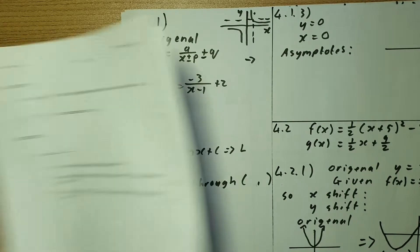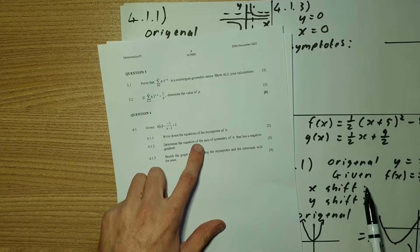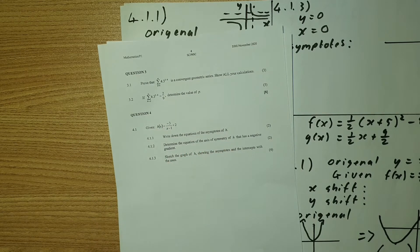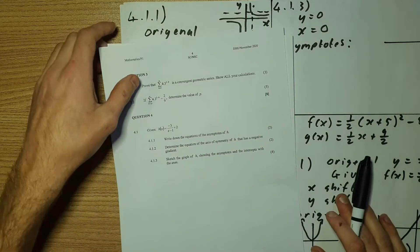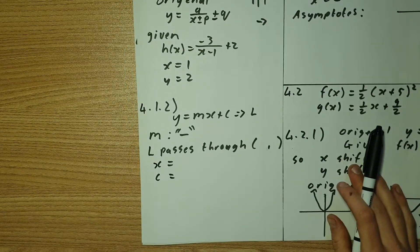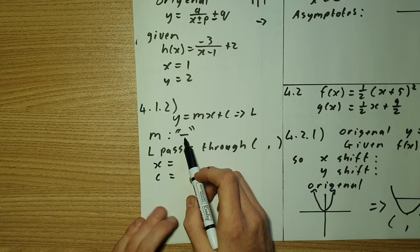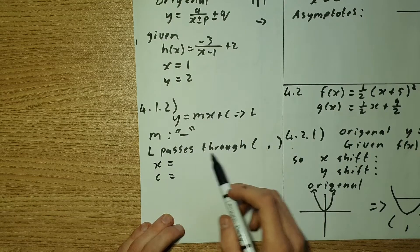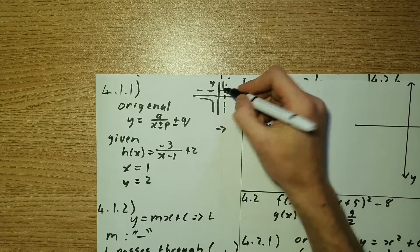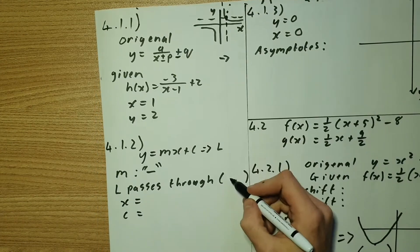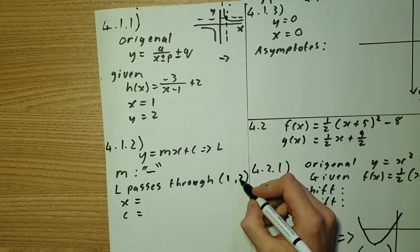Now the next question is asking us determine the equation of the axis of symmetry for h that has a negative gradient. So we know we're dealing with a negative gradient so m needs to be negative. Then the line passes through my new asymptotic point where those two intercept and that is where x is 1 and y is 2.